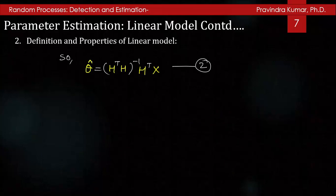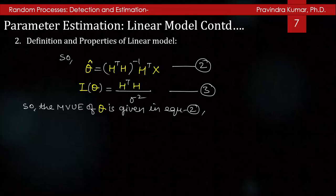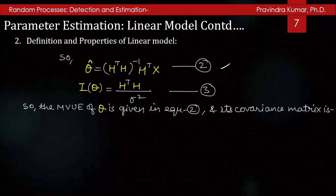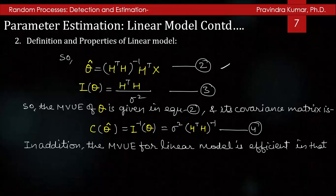So the estimated value of θ is θ̂ = (HᵀH)⁻¹Hᵀx, and the Fisher information is I(θ) = HᵀH/σ². Therefore, the MVUE of θ is given by this equation, and its covariance matrix is c(θ̂) = I⁻¹(θ) = σ²(HᵀH)⁻¹. In addition, the MVUE estimator for the linear model is efficient in that it attains the CRLB.